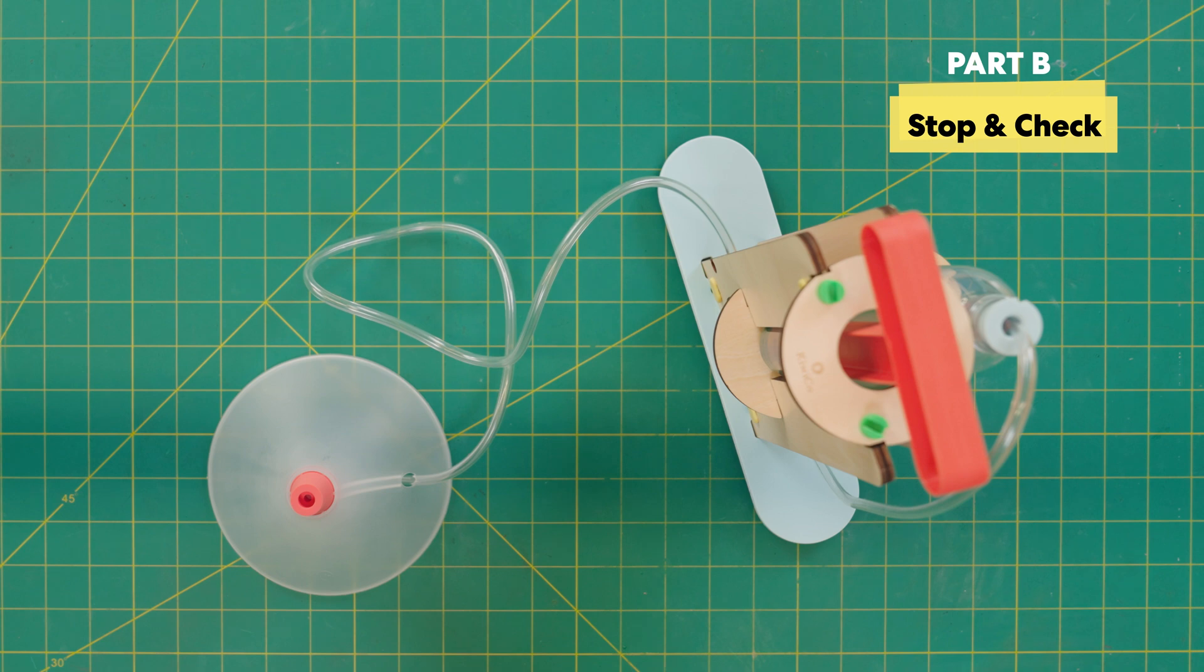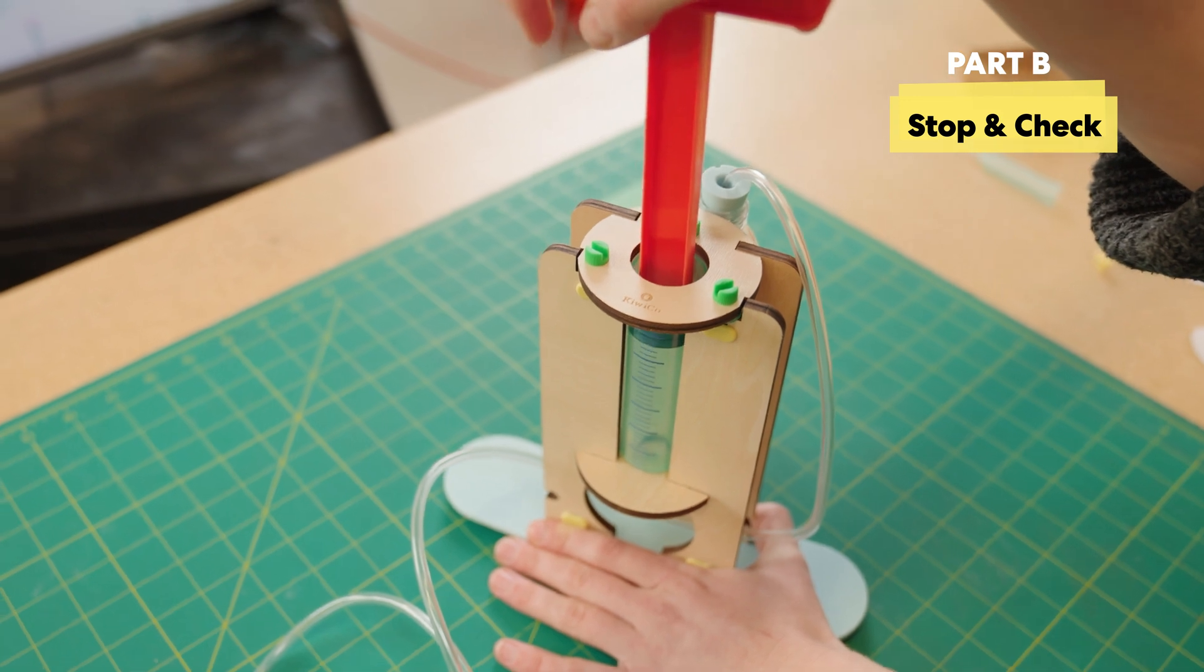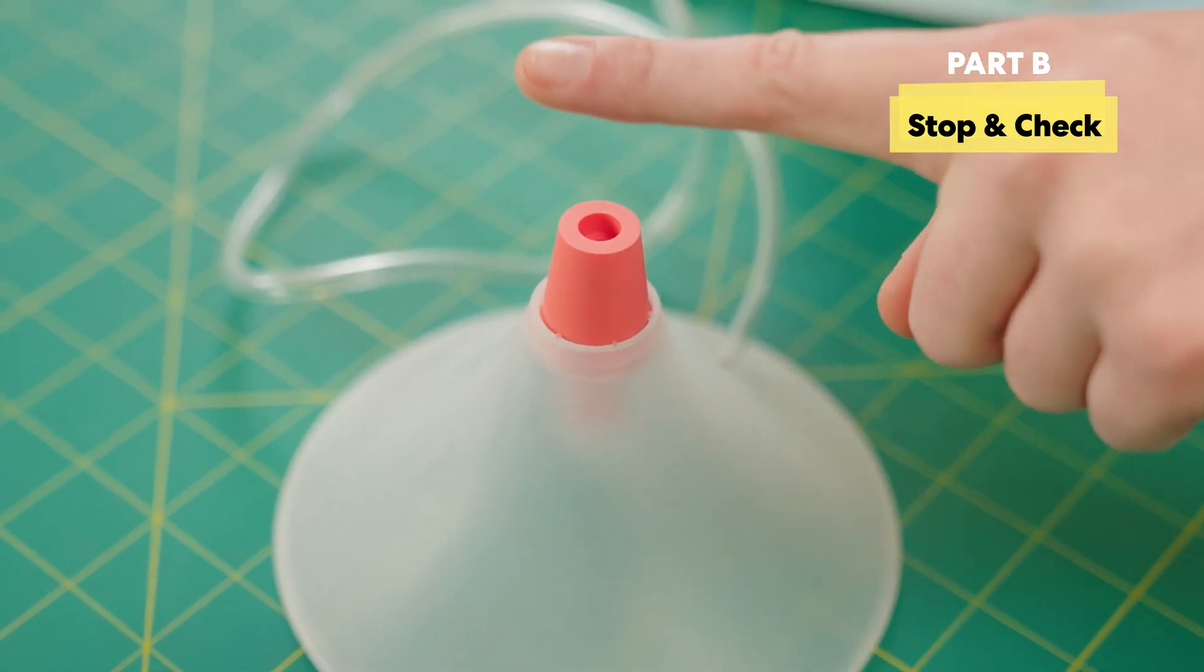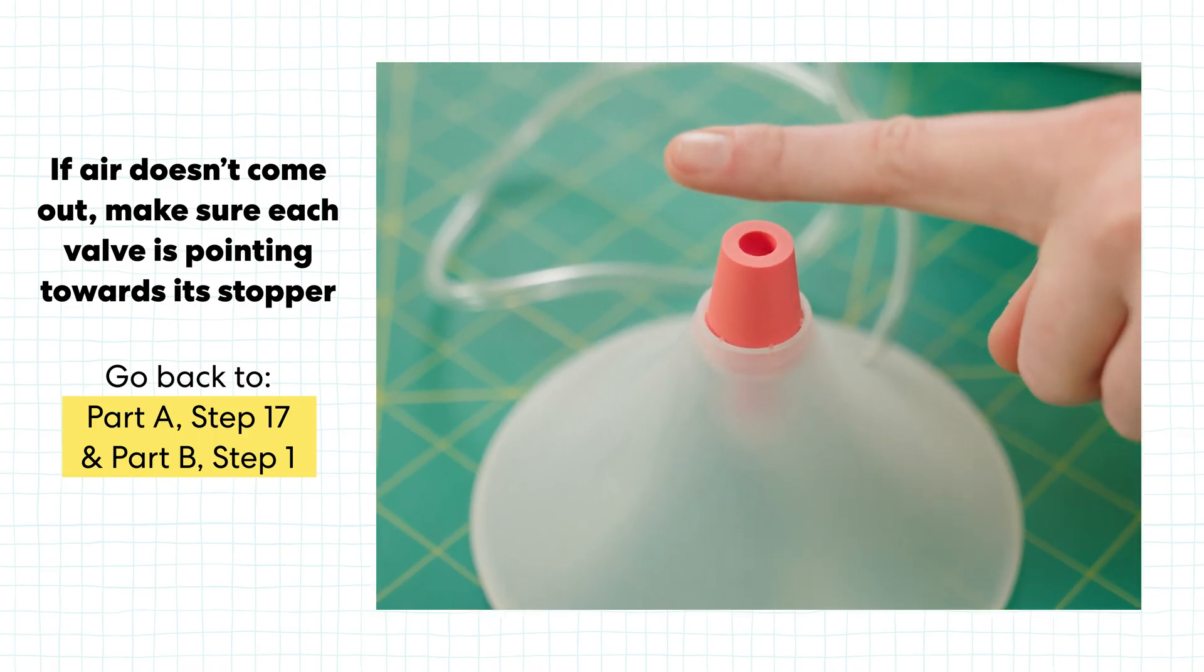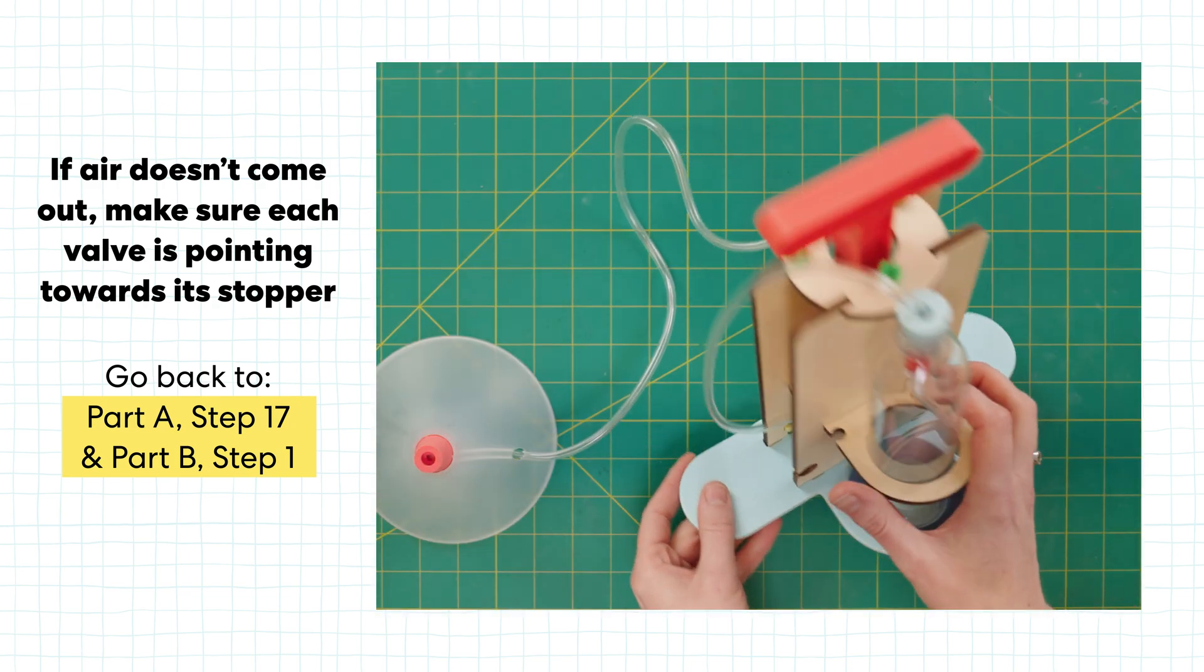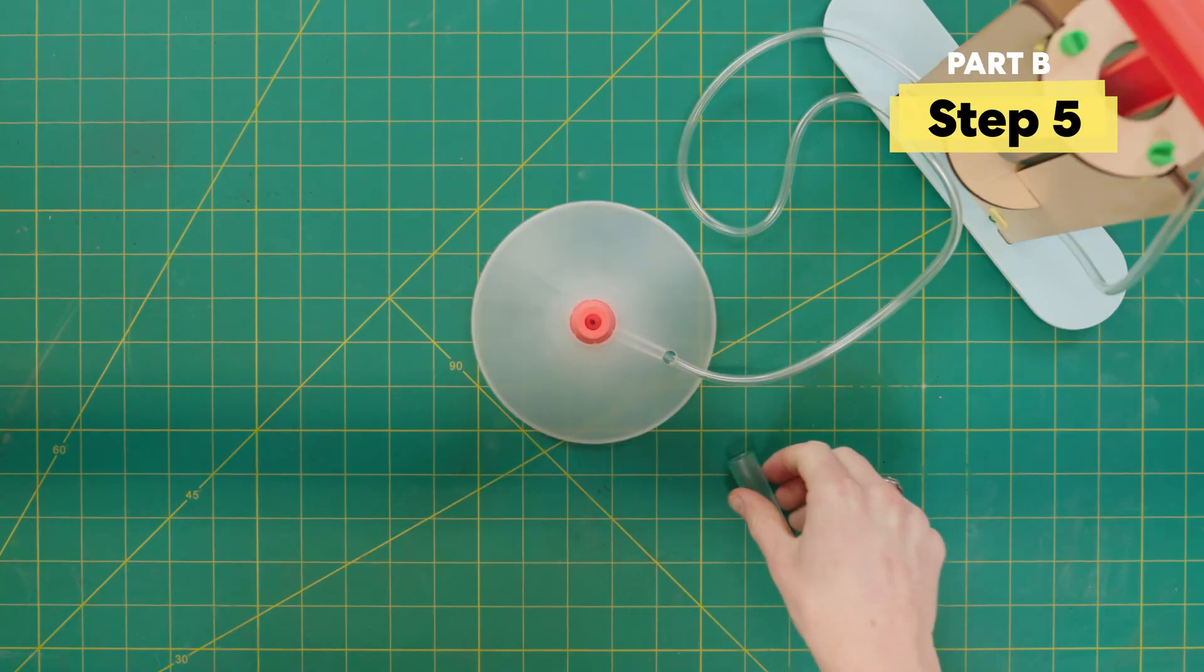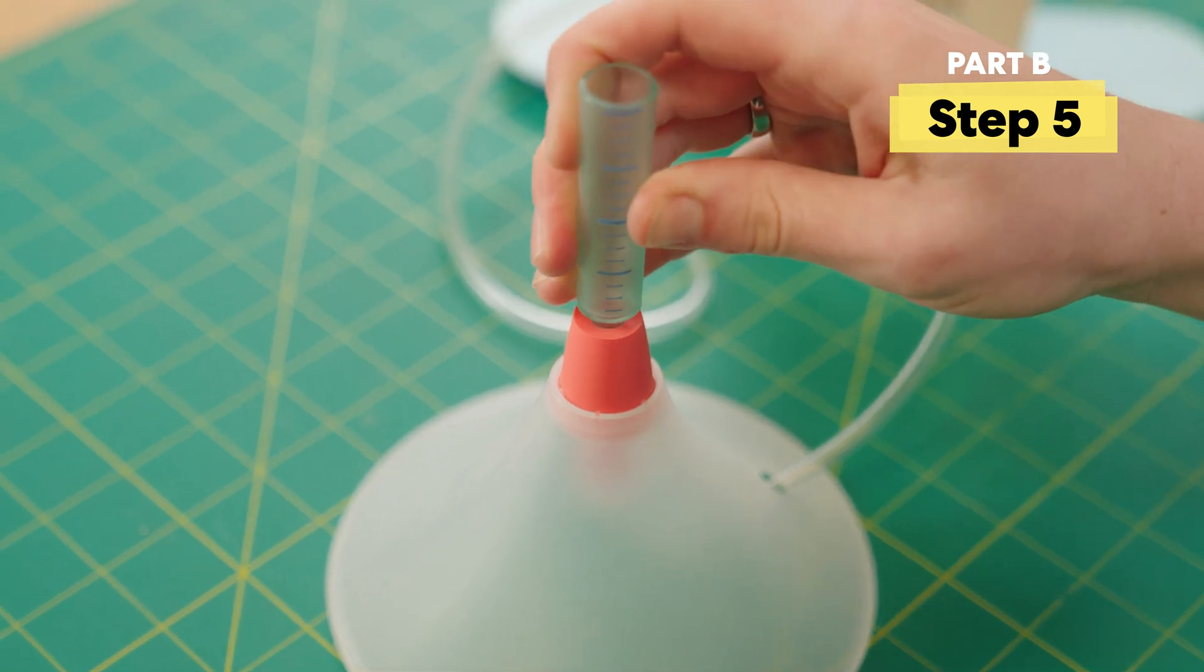Alright, before we move on, let's make sure that our launch pad and detonator are assembled correctly. Try out the plunger. You should be able to pull the handle all the way up and push it all the way back down. When you push down, air should be coming out of the red stopper. If air isn't coming out, then double check that all of your tubes are connected and that your valves are pointing in the correct direction. For more details, go back to part A, step 17, and part B, step 1. Once everything's working well, put the chemical tube into your launch pad and move on.